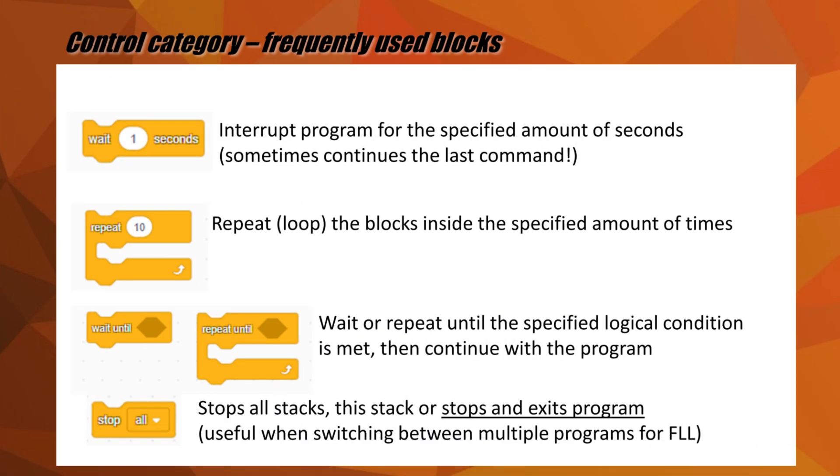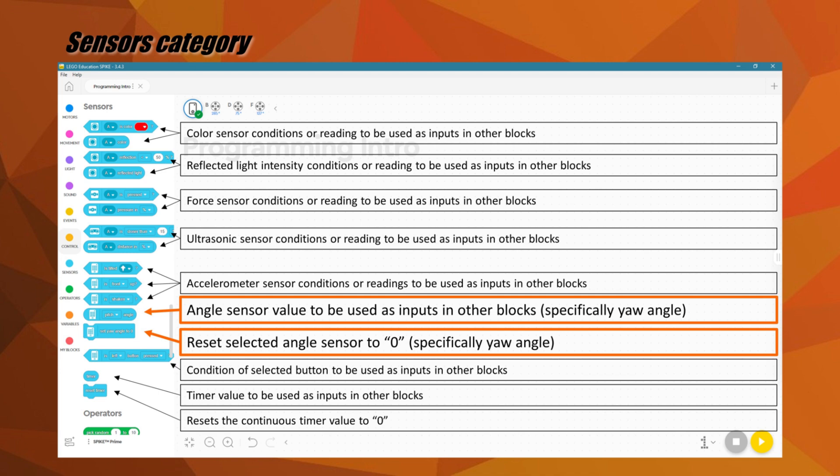The orange blocks make up the control category. The most commonly used control blocks are for interrupting a program, creating loops through repetition of blocks, making the program repeat blocks or wait until a condition is met, adding if-else conditions, or stopping the current program or branch.